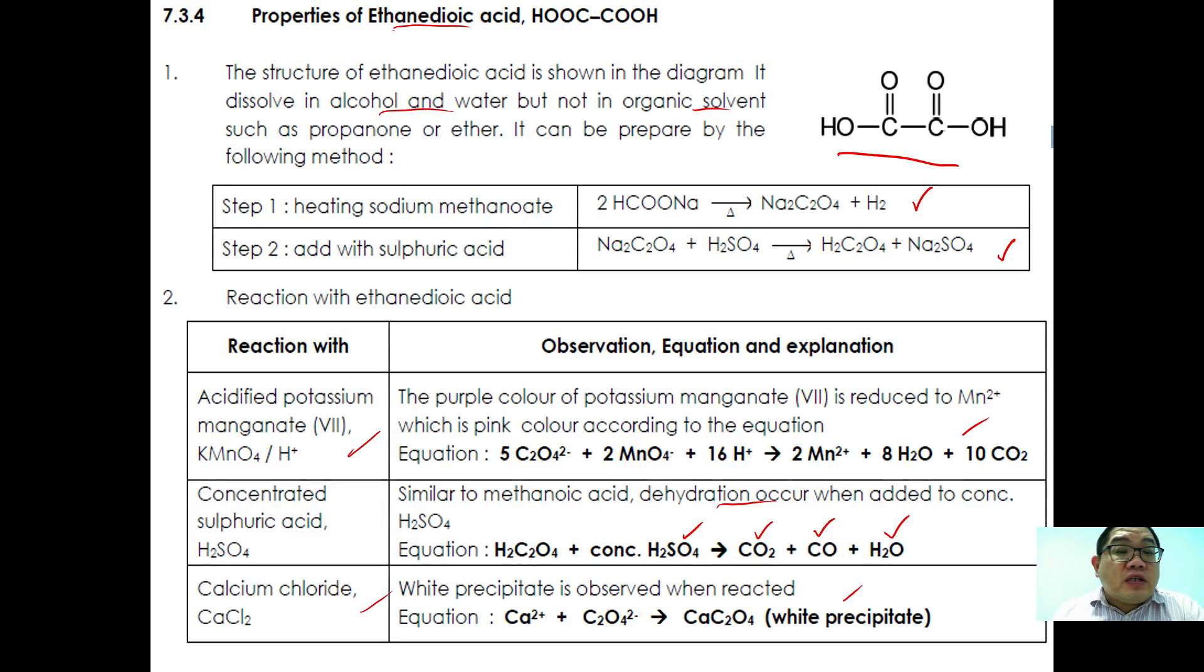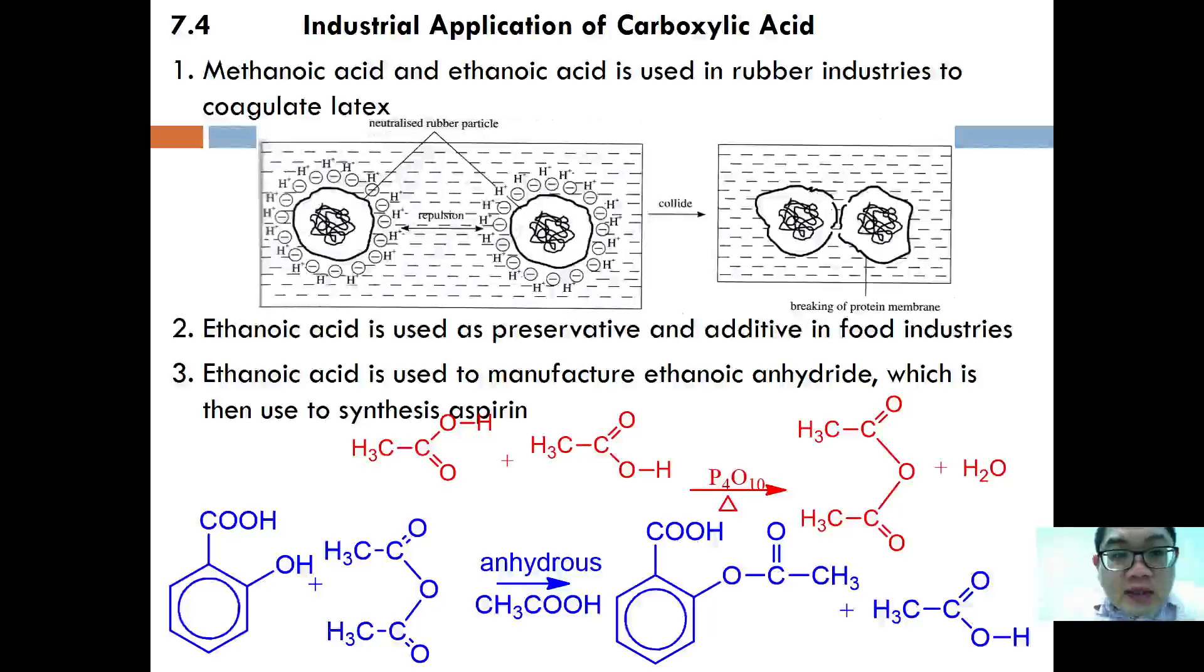These are the two special carboxylic acids that you must know. Here are a few industrial applications of carboxylic acid. Methanoic acid is used in rubber to coagulate the latex.